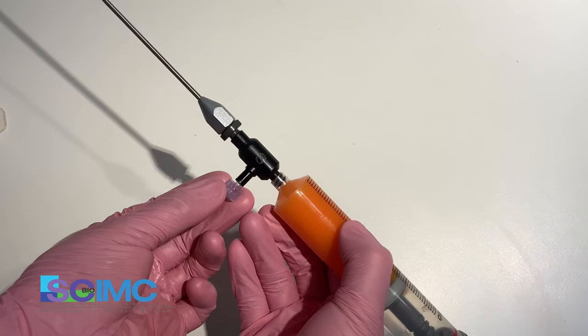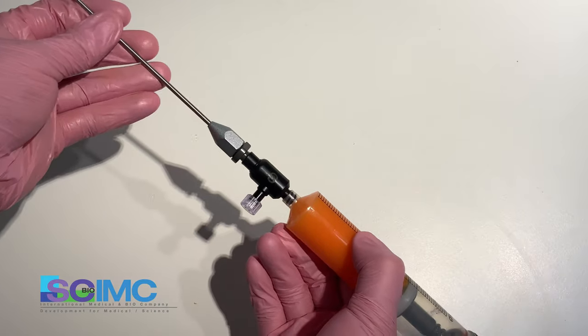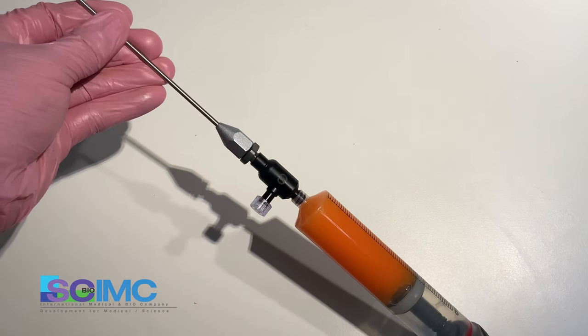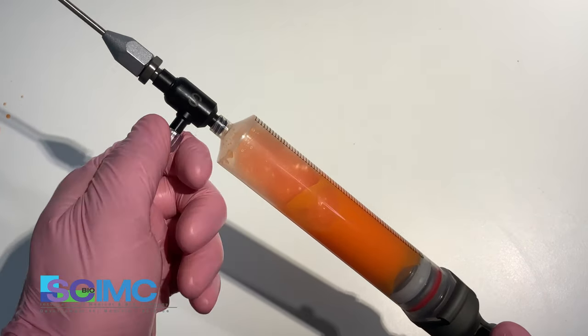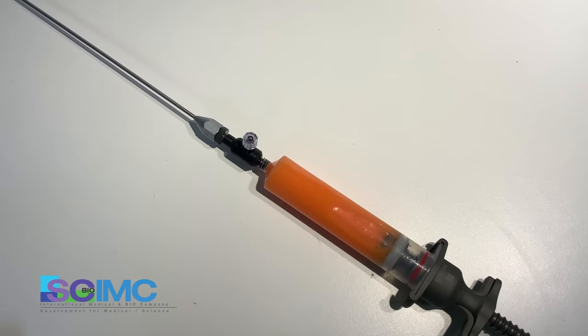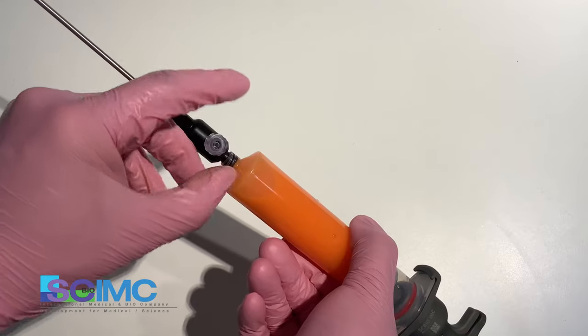This is the protection cap. Protect for the contamination. When you remove the air, open a little bit. When you need to transfer harvested fat to the empty syringe, open the cap.